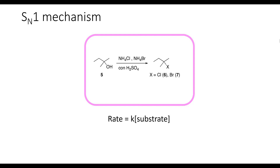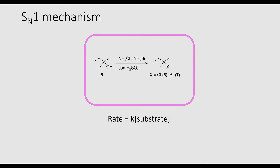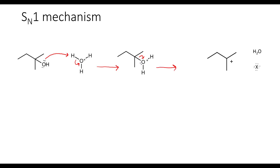The rate of the SN1 reaction only depends on the concentration of the substrate, which is 2-methyl-2-butanol in our experiment. Note that we're going to carry out this reaction in concentrated sulfuric acid. Hydroxide is not a good leaving group on its own, so we use acid to help it out. In an acidic environment, the hydroxide group grabs a proton from the acid, resulting in an intermediate where the leaving group is now a water molecule. Water is a much better leaving group than hydroxide, so it takes the electrons from the bond and leaves, resulting in a carbocation intermediate. The carbocation is a real intermediate that can be isolated and studied spectroscopically. In the last step, the halide adds to the carbocation, giving us our final product.